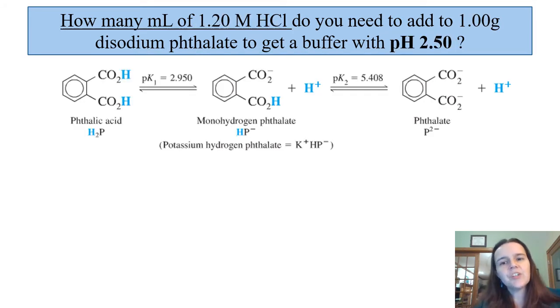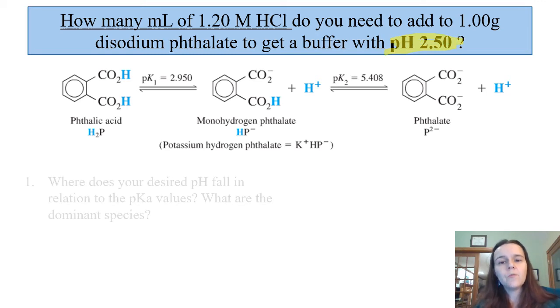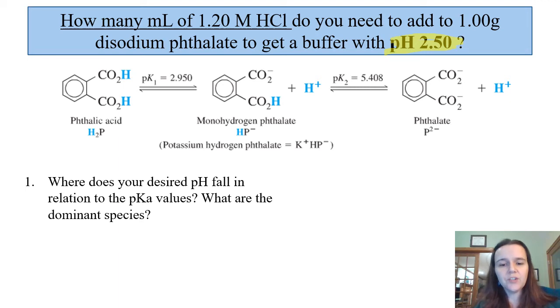Now, one more question here would be, if we have the same setup with the same diprotic acid of phthalic acid, but now instead of getting to a pH of 6, we want to go to a pH of 2.5. What are we going to do? Well, it's the same overall steps. The first is to identify where the desired pH falls within the range of the pKa values. Now that we want a pH of 2.5, it is not only less than the 5.408, but it's also less than pK1 of 2.95. And so our 2.5 is all the way to the left-hand side of this ladder diagram.